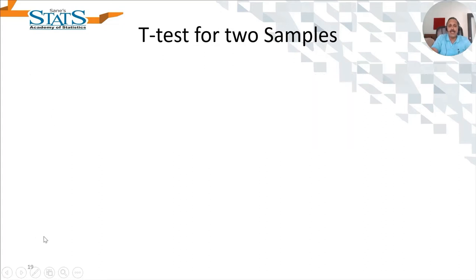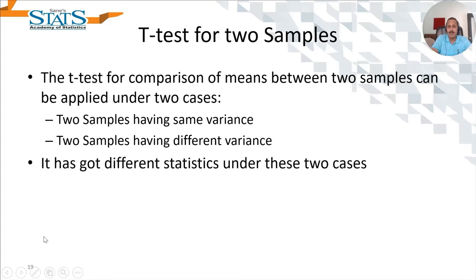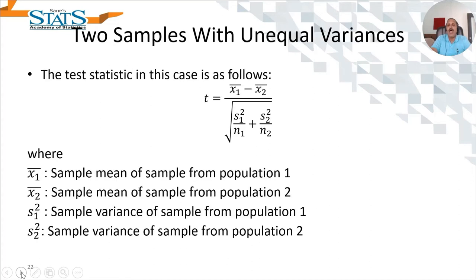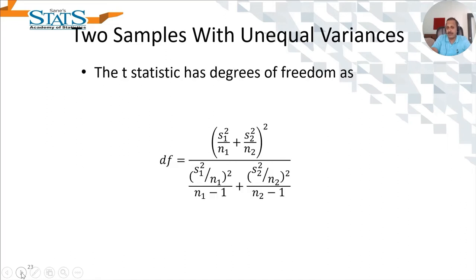The two-sample t-test with equal variances pools the variance from both samples and uses that combined variance in the test statistic, with degrees of freedom calculated accordingly. The test assuming unequal variances treats the two variances separately, with a specific degrees of freedom formula for that case.